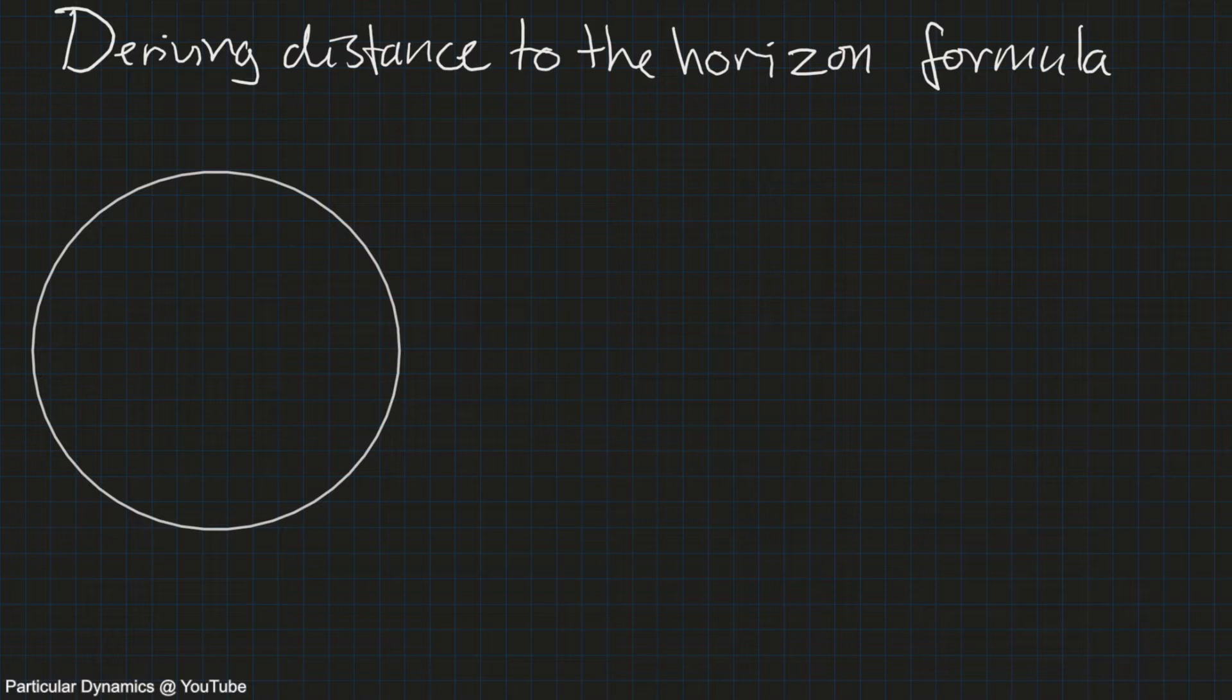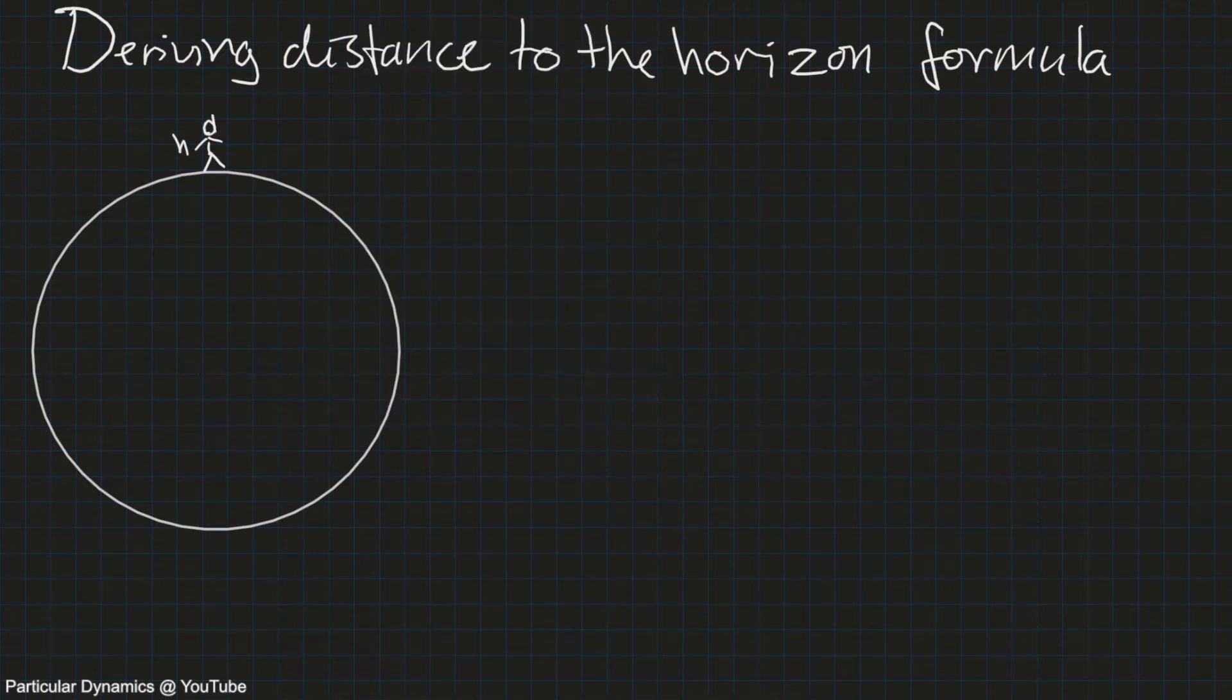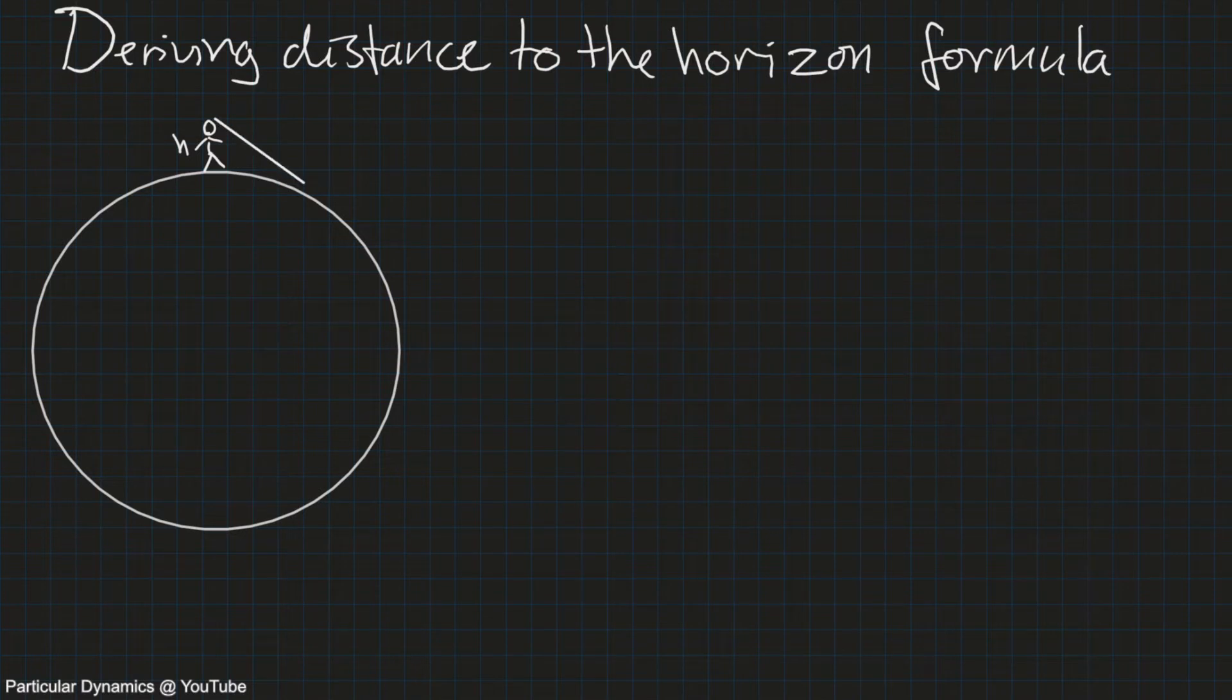Given that we are an observer on the top of the ball here, and this observer has a certain height h, and what we want to figure out is from that height how long is the line of sight to the horizon.